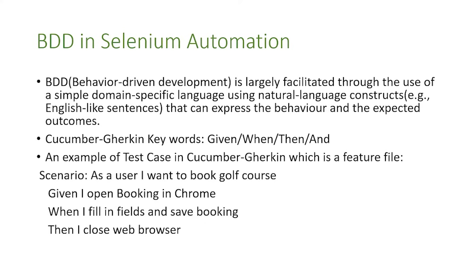One thing that we use a lot is Cucumber Gherkin, and in Cucumber Gherkin the keywords are: given, when, then, and and. Here's an example of a test case in Cucumber Gherkin, which is a feature file. We have a scenario where a user wants to book a golf course: Given I open booking in Chrome, When I fill in fields and save booking, Then I close web browser. We see that in this scenario we use the given, when, then, and and keywords.